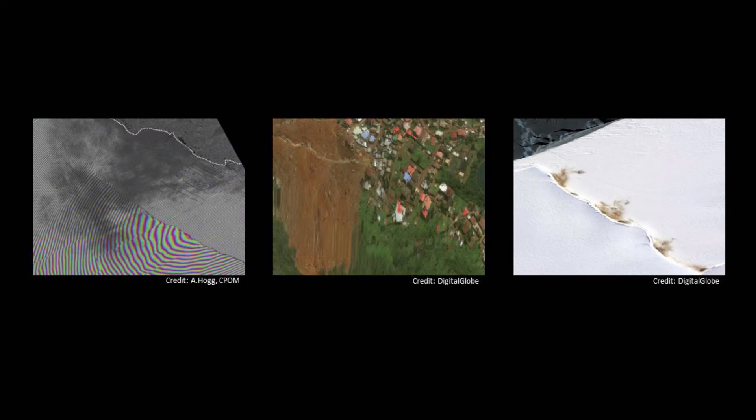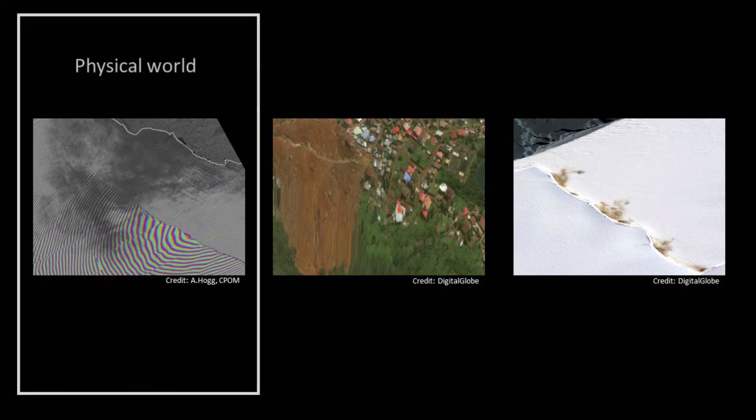If we want to understand the implications of that warming world for people and their lives, we need information not just at the global scale but at local and regional scale. That brings me back to the images I showed at the start. I want to describe how Earth observation from satellites and other data, together with data analytics, is transforming our ability to do a health check of the planet — and a very broad-spectrum health check. The first example I want to give is from the physical world.